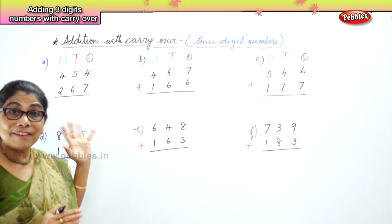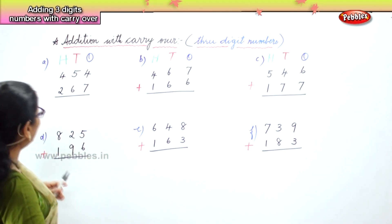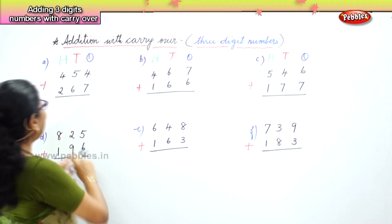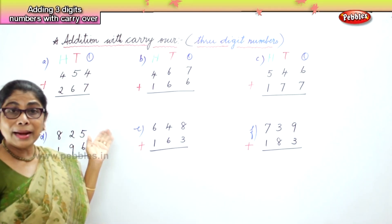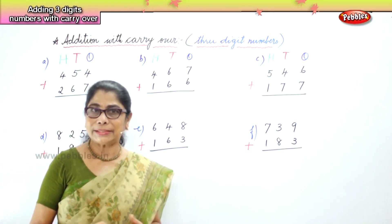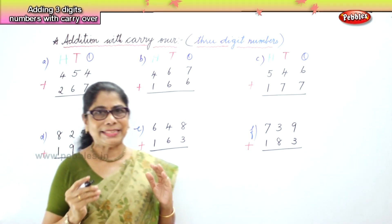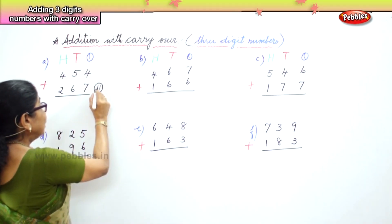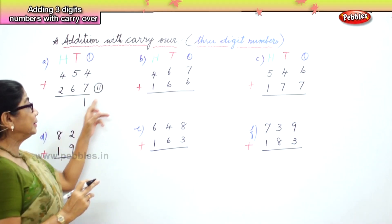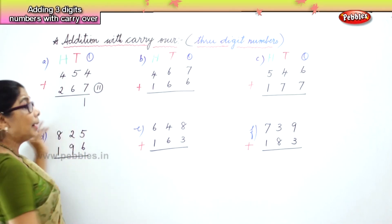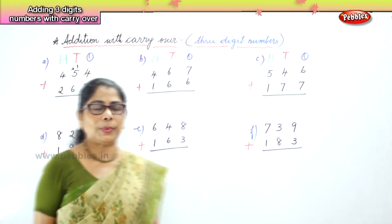We have 454: 400, 5 tens, and 4 ones. Adding 267: 200, 6 tens, and 7 ones. First, look at the ones place — 4 ones and 7 ones. What is 4 plus 7? 11. So you have 11 in the ones place. 11 is 1 ten and 1 one. So you put 1 in the ones place and carry the 1 ten over to the tens place.